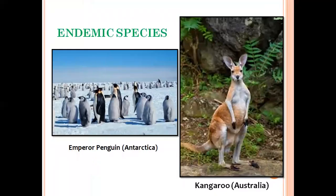Now, what is an endemic species? I think this is quite familiar to most of you. Endemic species are those that are confined to a particular geographical region and found nowhere else in the world. The simplest example is the emperor penguin, which is found only in Antarctica and nowhere else.